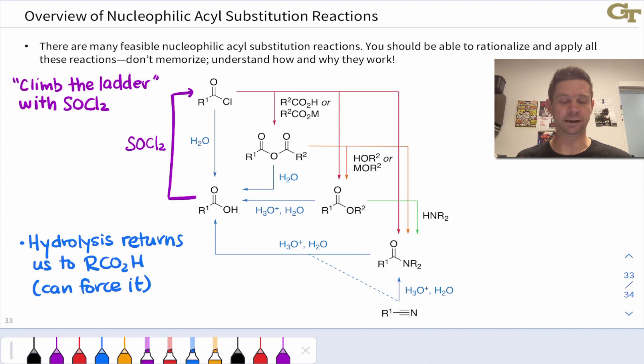Acid anhydrides are similarly very flexible. We can't make acyl chlorides from them, but we can make carboxylic acids, we can make esters, we can make amides, so on and so forth.